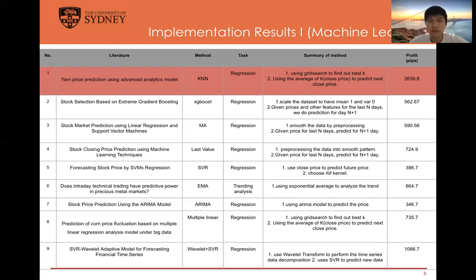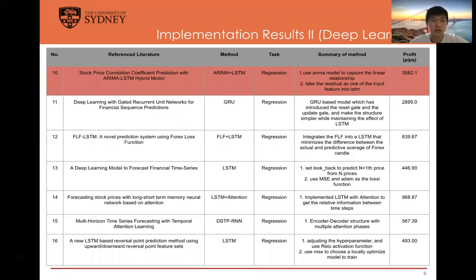Here are the backtesting results in terms of profits. KNN achieves the best average profit of about 2,600 pips among machine learning models. For the deep learning methods, ARIMA plus LSTM achieves the best average profit of about 3,500 pips.